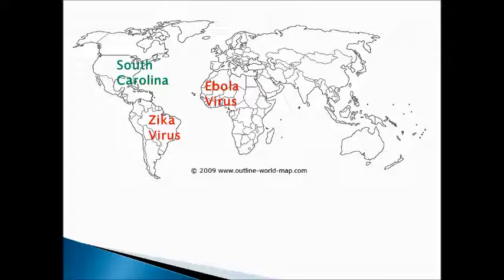Before we begin, think about this: here in 2016 we have the Zika virus in Brazil, and in 2014 we had the Ebola virus in West Africa. We live here in South Carolina — so why should we even be scared of Ebola or Zika? I'm in North America; Ebola is across the Atlantic in Africa and Zika is in South America. The answer is that due to trade or travel, these viruses could come into South Carolina — and that's similar to the bubonic plague, which spread from Asia to Europe due to trade.